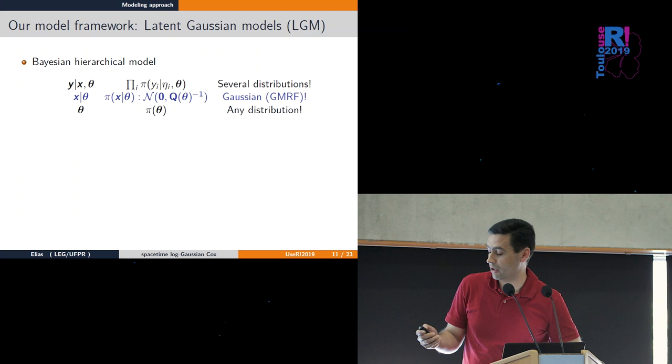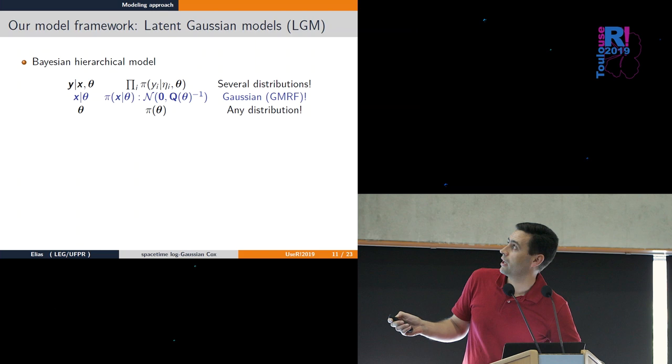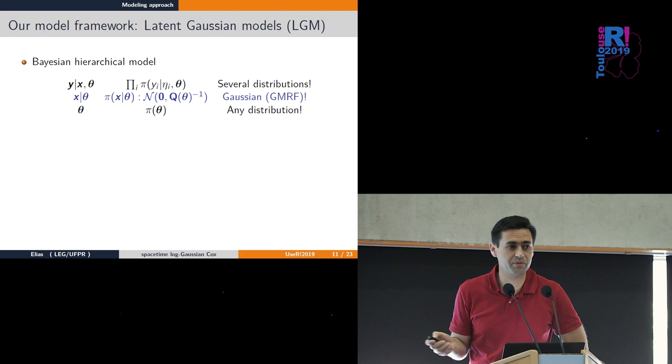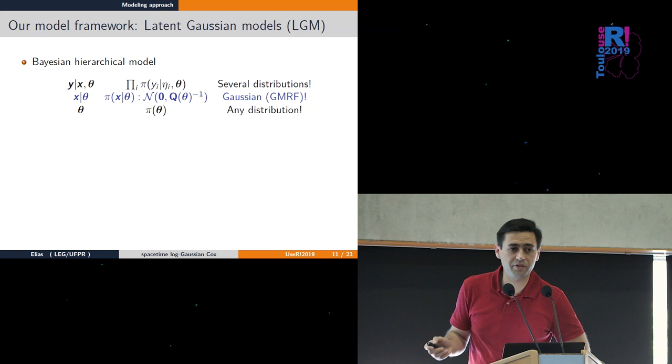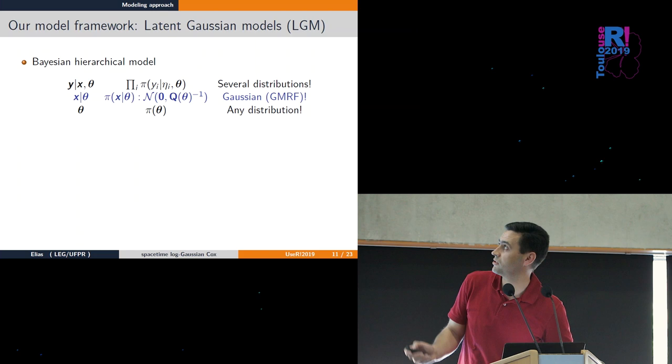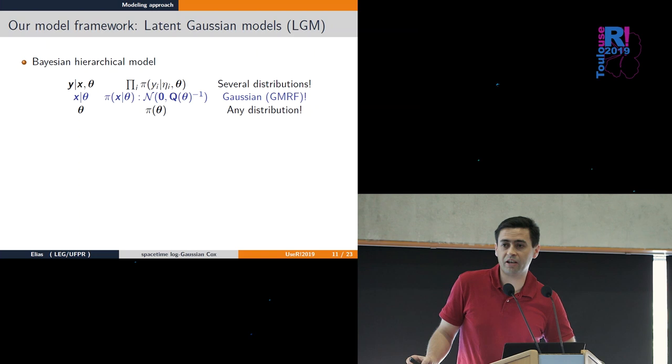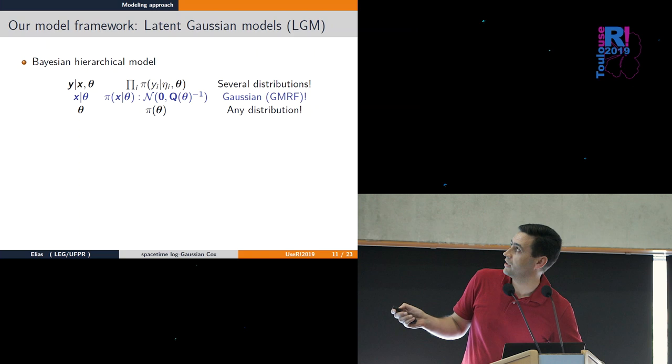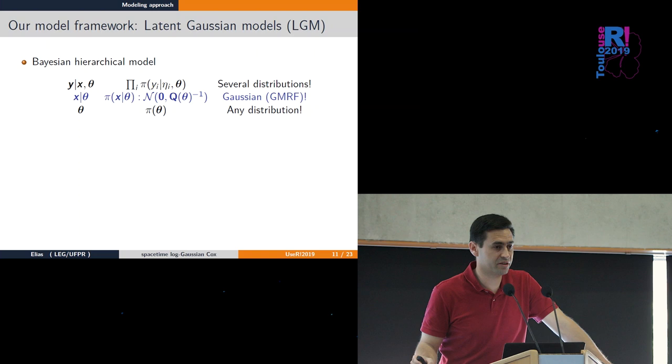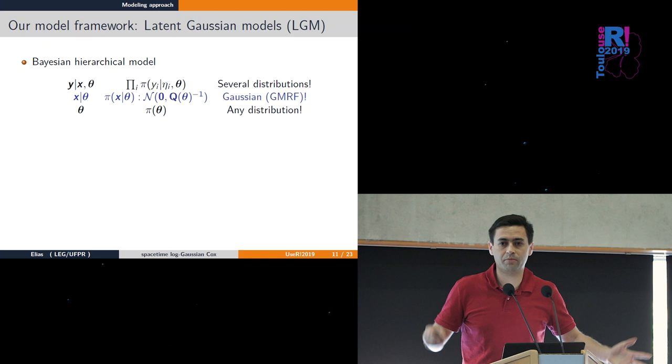For computations, in the Bayesian hierarchical framework we have y given the latent field and theta. There are more than 100 available distributions for this level. The next level restricts to Gaussian processes because they're easier to compute with. Then we have priors for the process parameters like range and marginal variance.